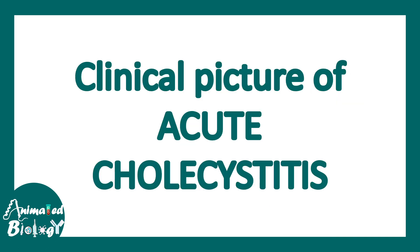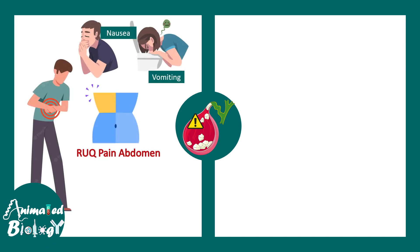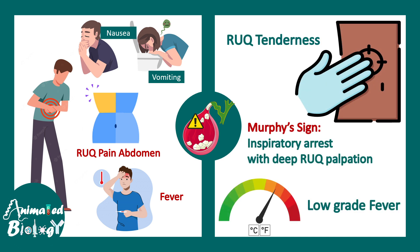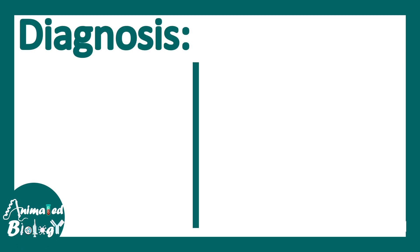Let's understand the clinical picture of acute cholecystitis. The patient presents with nausea and vomiting, right upper quadrant abdominal pain, and fever. On examination, you get right upper quadrant tenderness, and a very famous sign — Murphy's sign — which is inspiratory arrest with deep right upper quadrant palpation, along with low-grade fever.